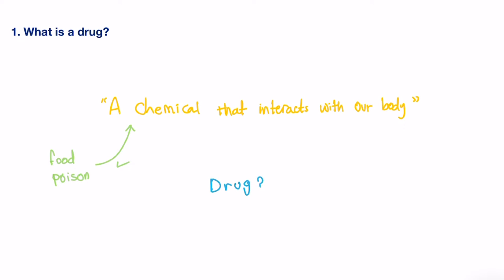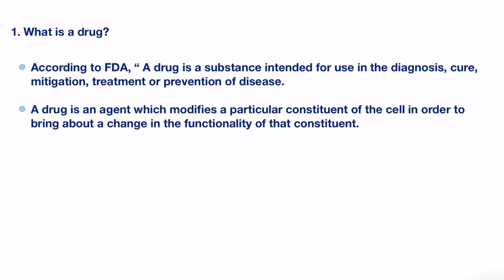Then what is the proper definition of a drug? Here I've picked two. The American Food and Drug Administration defines a drug as a substance intended for use in diagnosis, cure, mitigation, treatment, or prevention of a disease.